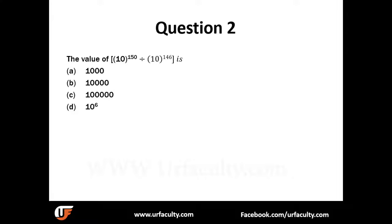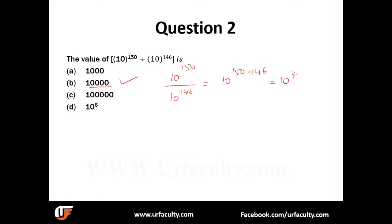Next question: find the value of 10 to the power of 150 divided by 10 to the power of 146. As mentioned, you just subtract the powers: 10 to the power of 150 minus 146 equals 10 to the power of 4, which gives you 10,000 — four zeros. That's the answer.